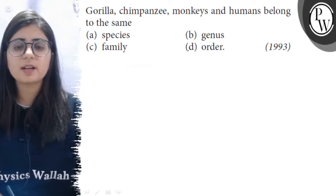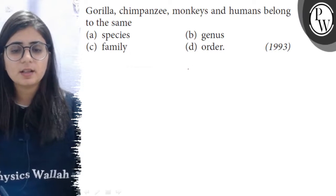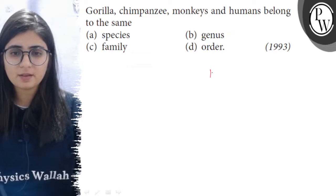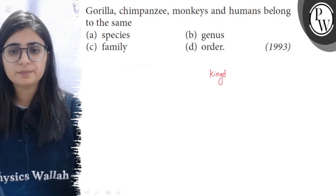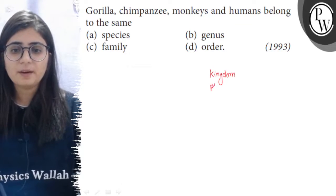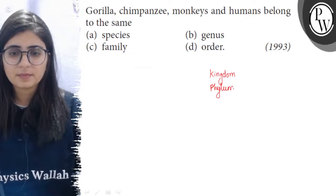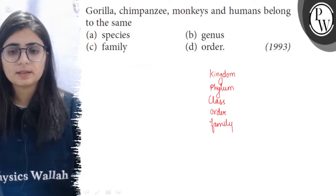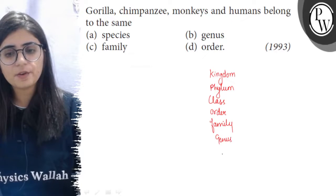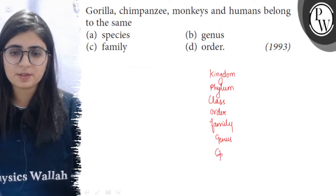All these four options are taxonomic categories. If we arrange them hierarchically: Kingdom, Phylum, Class, Order, Family, Genus, and the lowermost category is Species.